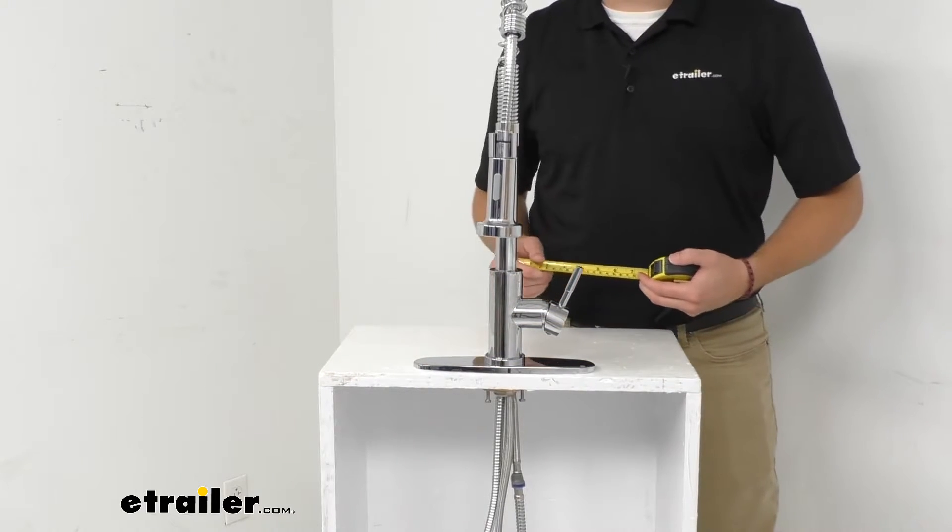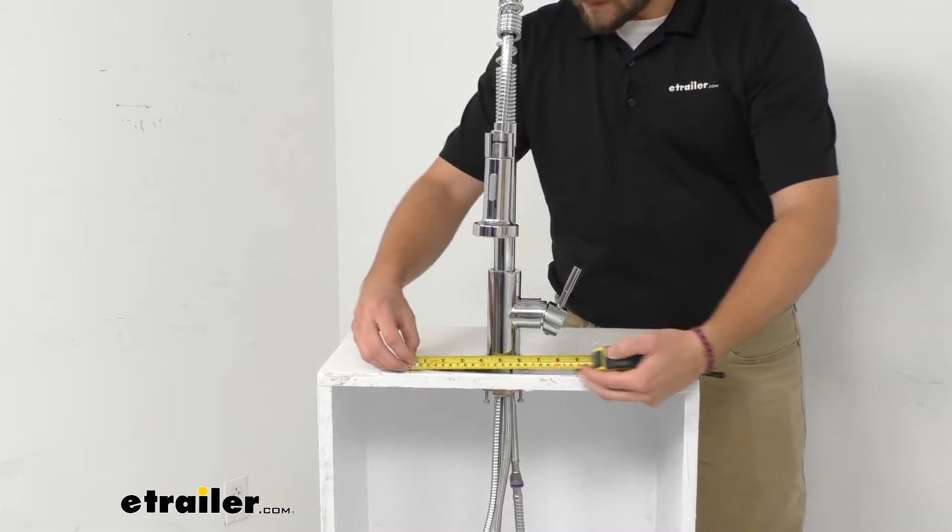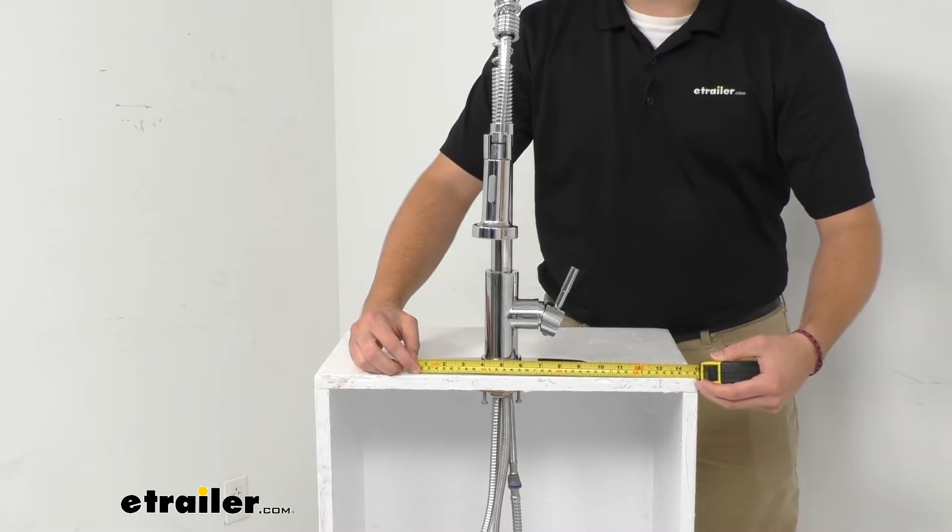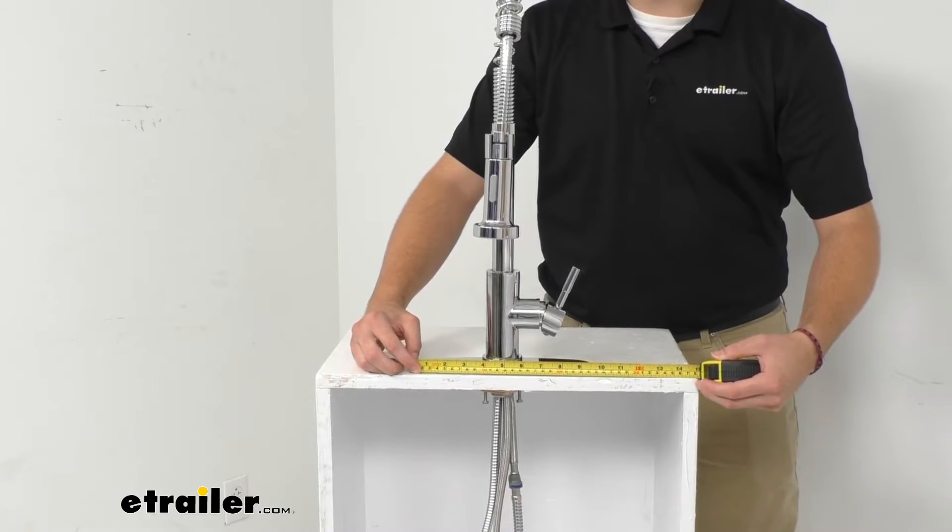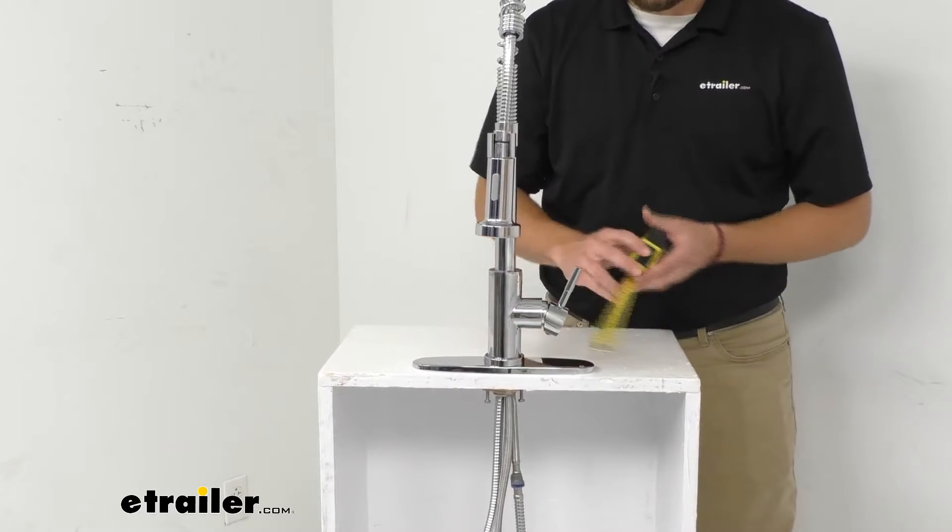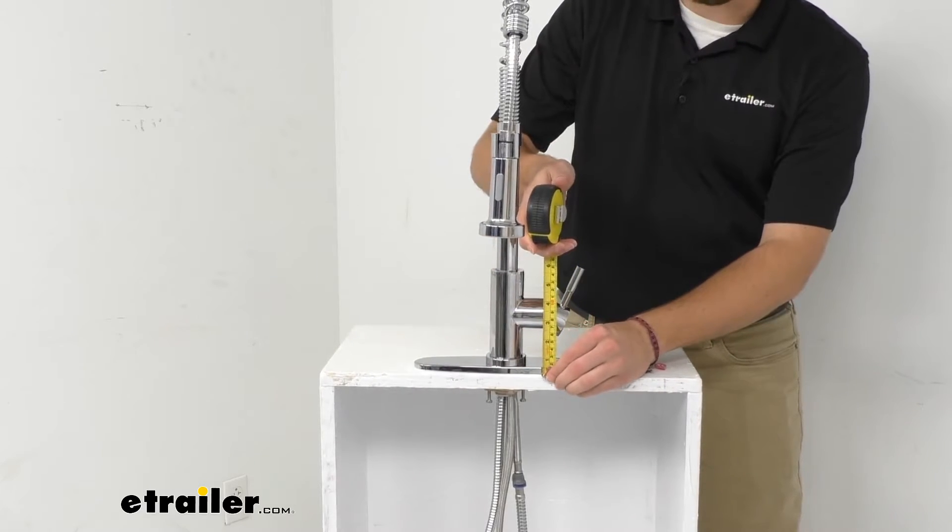And for our plate width here, we can go ahead and put ourselves at 9 and 3/4 of an inch, while our thickness of our plate sits at 3 and 1/8 of an inch.